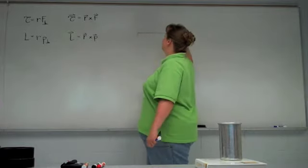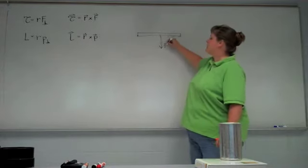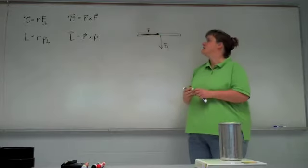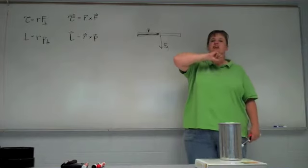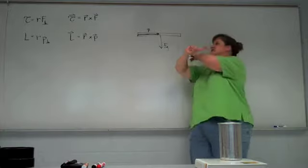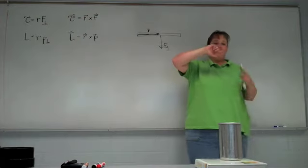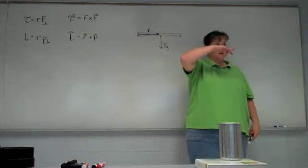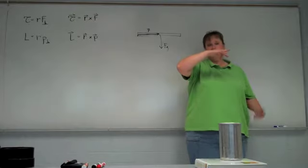For example, with our rod: the force of gravity is downward, and the lever arm points from the rotation axis out to where the force is applied. So if you put your index finger in the direction of r — it has to be your right hand — then turn your wrist until the force vector points out of your palm. My thumb is the result. So that gives negative Z.